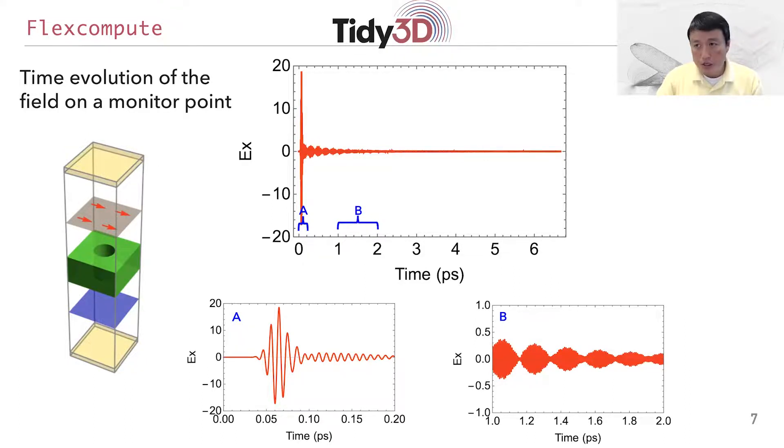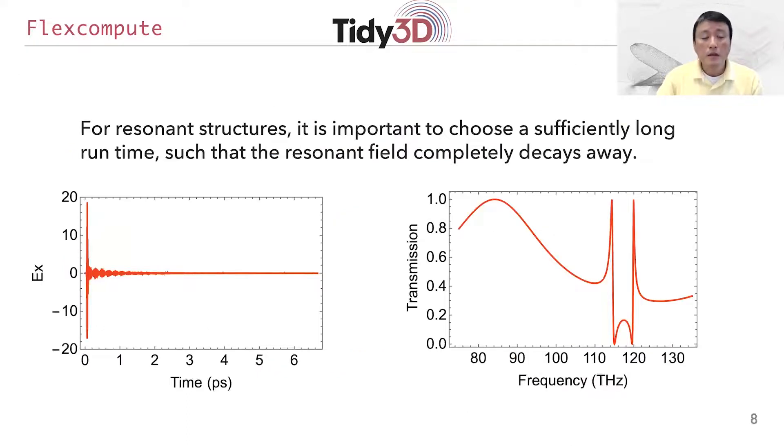As I have mentioned, in obtaining the nice looking spectrum on the right, we run the simulation to a time of about six picoseconds, so that all the amplitude in the resonance essentially decays to zero. In other words, we choose the computational time duration to be significantly longer than the resonant lifetime of the system. And if we do that, we can get a nice transmission spectrum.